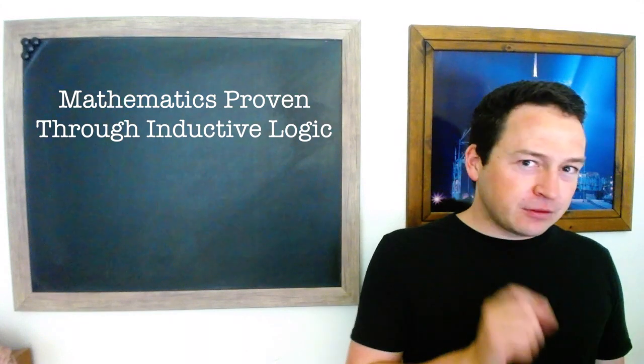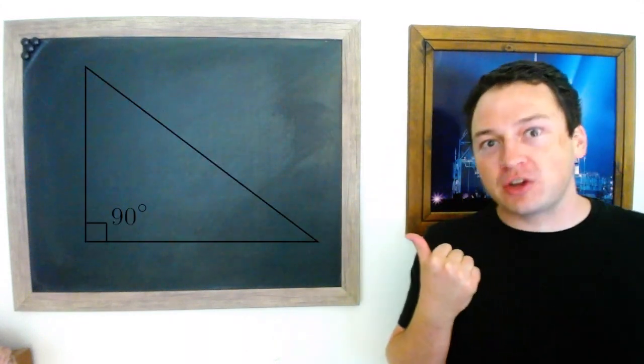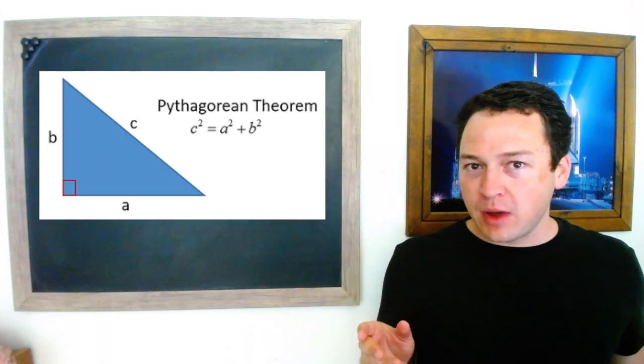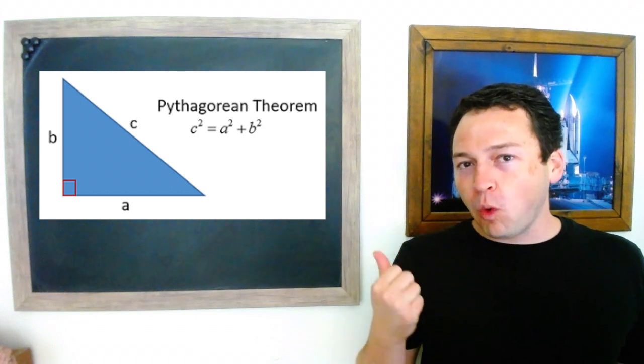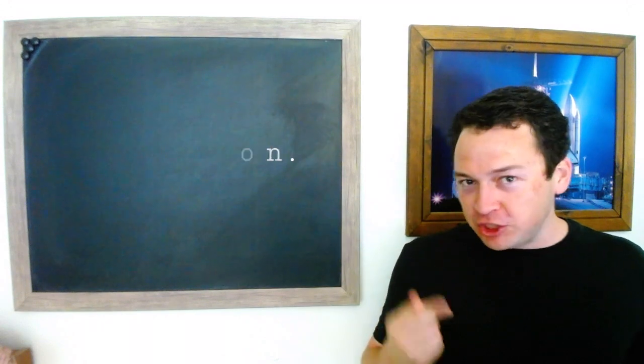Now, observations on their own are not enough. You can't just look at a picture of a right triangle and have the Pythagorean theorem pop into your head. It doesn't work that way. A generalization as important as this one requires a long chain of abstract connections in addition to observations.